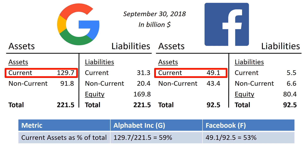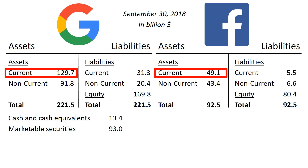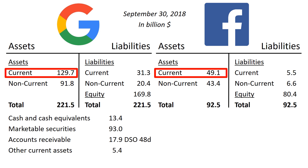Let's look inside and see what makes up the current assets balance. For Alphabet Inc: cash and cash equivalents $13.4 billion, marketable securities $93 billion, accounts receivable $16.9 billion, which is equivalent to 48 days of day sales outstanding if you relate it to Alphabet Inc's Q3 revenue, other current assets $5.4 billion, to get to total current assets of $129.7 billion.